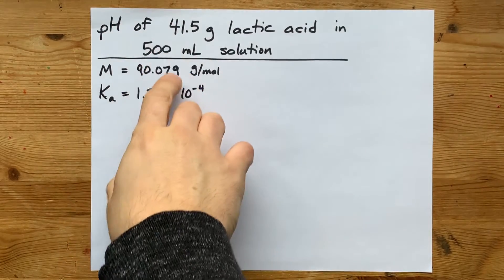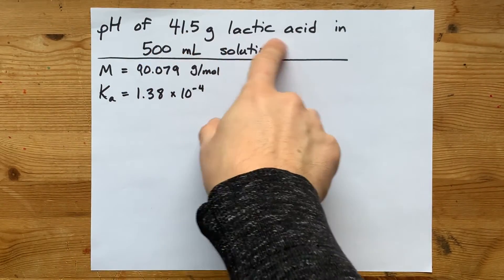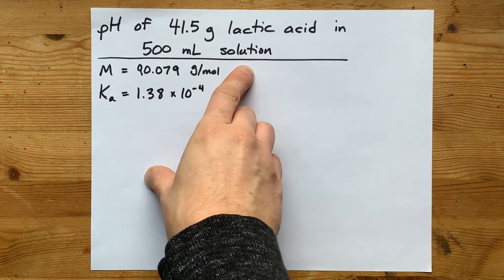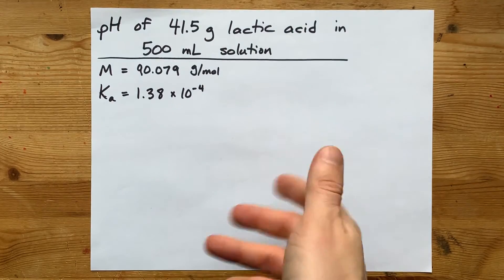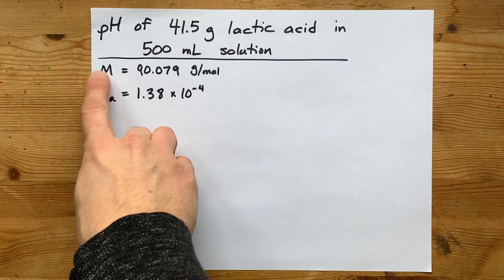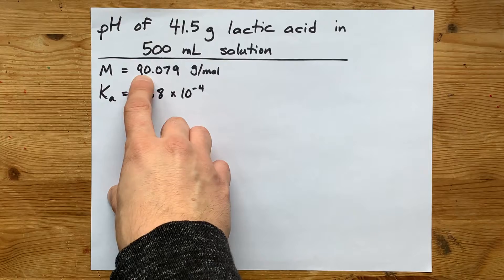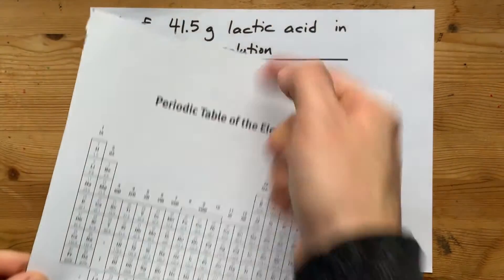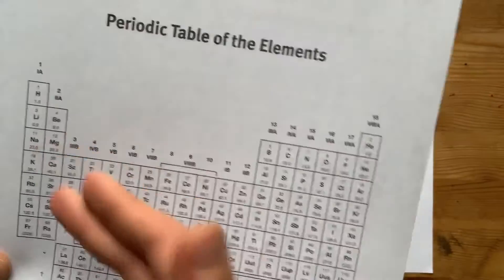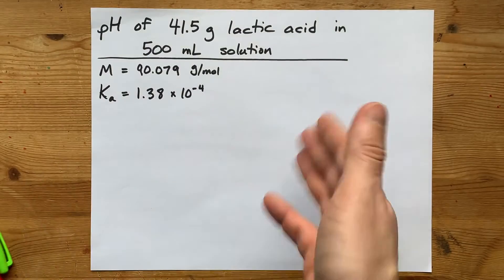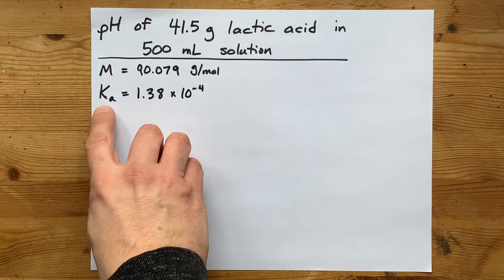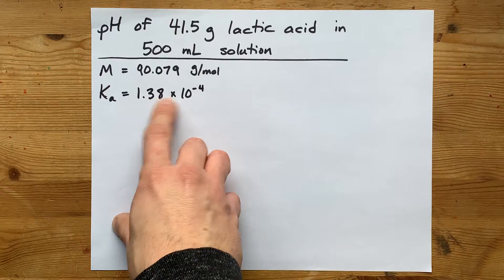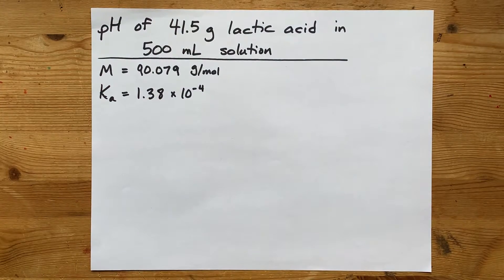I was asked for the pH of 41.5 grams of lactic acid dissolved to make 500 milliliters of solution. The question gave me the molar mass of lactic acid, which is 90.079, but if they didn't give that to you, you could calculate it with the formula of lactic acid by adding up the molar masses of the atoms that make it up. You also have to be given the acid dissociation constant Ka, which is 1.38 times 10 to the negative 4 here.